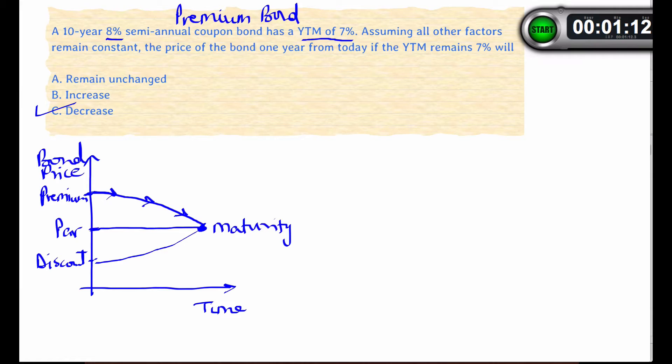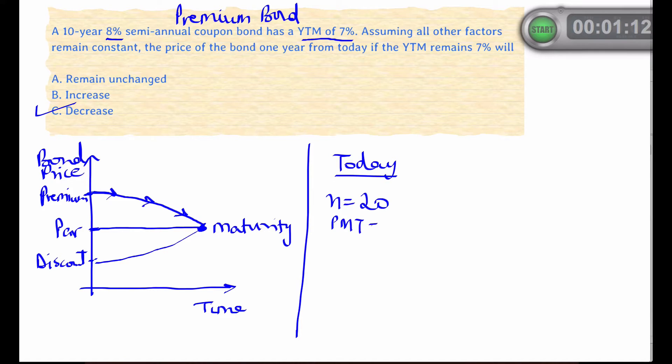So the correct answer is C. Now an alternative method, as I mentioned, is to actually plug in the numbers and calculate values. In this case we have an n of 20 periods, we have a payment amount of $40, we have an interest rate of 3.5%, and a future value of $1040. So we can compute the present value as $1091.16.